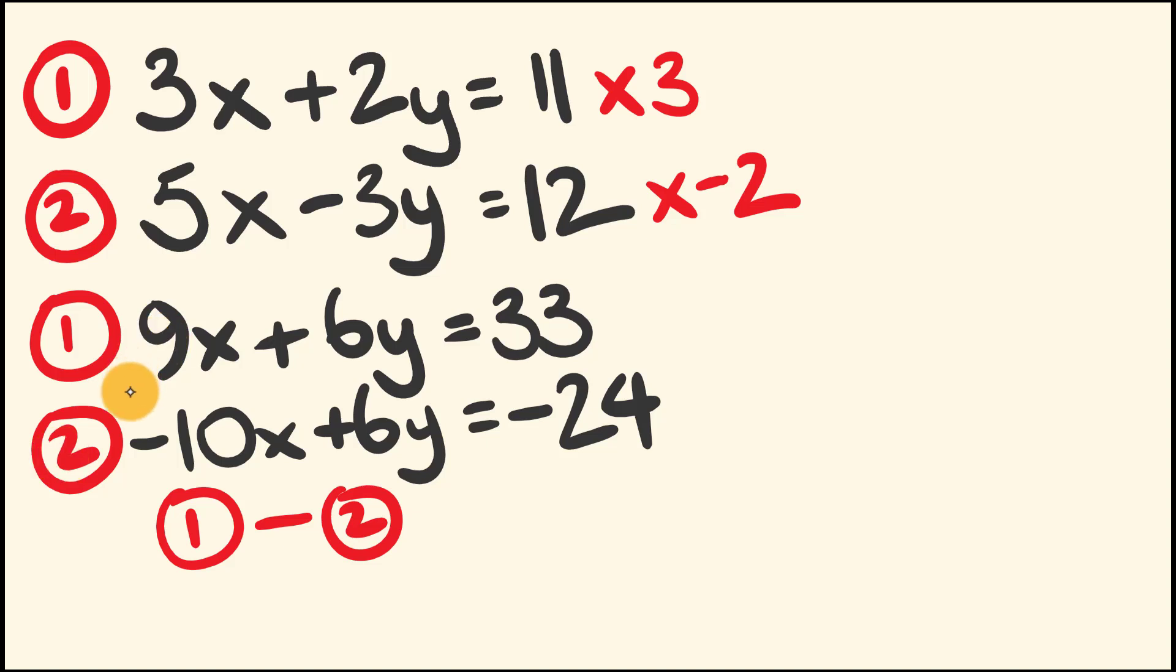Let's do this. So, 9x minus minus 10x. Well, a minus and minus becomes a positive. We're going to get 19x. And this is going to equal, well, 6y minus 6y is 0, so let's not worry about that. 33 minus minus 24. This is the same as 33 plus 24. This is 57. So, if 19x equals 57, x, we've got our first answer, is equal to 3. Let's put a circle around that.